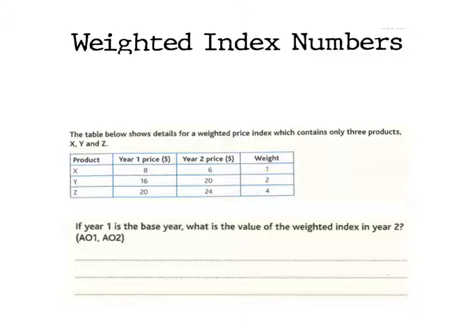In terms of certain goods, if you think about product Z, it might be food because it's got the highest weight, as it's consumed at a more regular basis than for example product X or product Y.